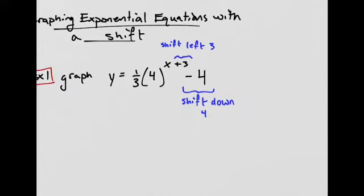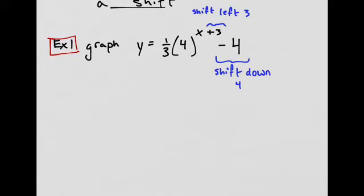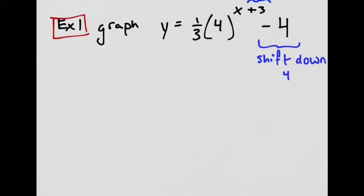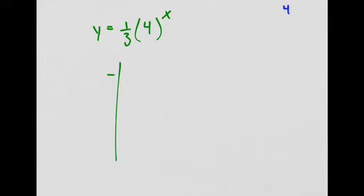So what I'm going to attempt to do is relate it back to what we've already been graphing, and then see if we can shift it left 3, then down 4. So I'm just going to rewrite this as y equals 1/3 times 4 raised to the x power. So I'm ignoring the plus 3 and ignoring the minus 4. I'm ignoring the shifts. So I'll just make a table of values for this. Normally I would try out just negative 1, 0, and 1.